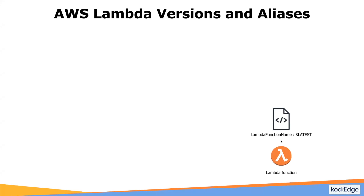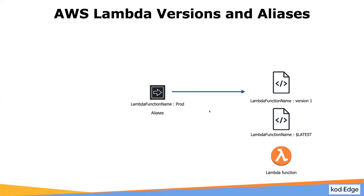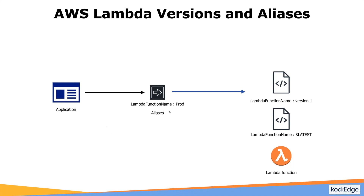We will create a function and it will have a default version as dollar latest. We will deploy a new version and publish it. Then we will create an alias on version 1, which will point to version 1 and we will name that alias as prod. The function ARN will look like: lambda function name colon prod. Similarly for the version: lambda function name colon your version number. Generally, applications are configured to point to the alias, so the alias abstracts the underlying version — the application is not required to know which version it is using; it is just pointing to the alias.